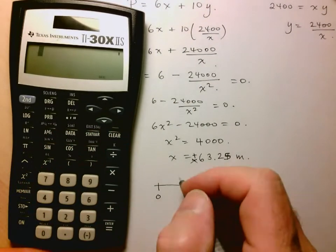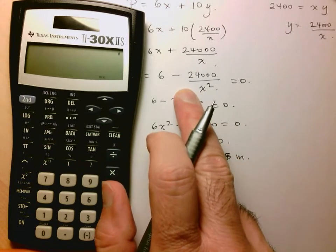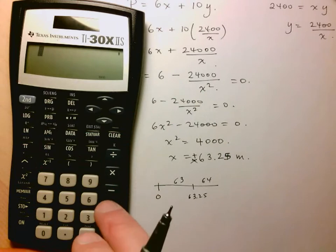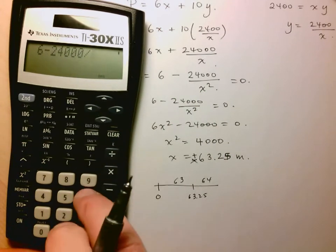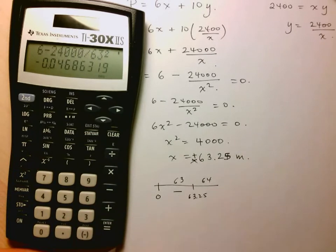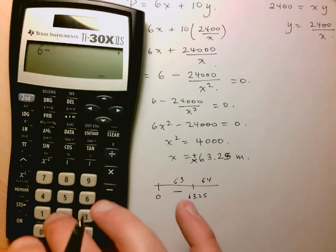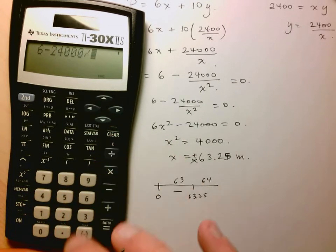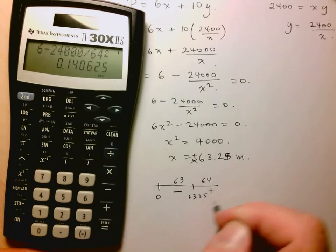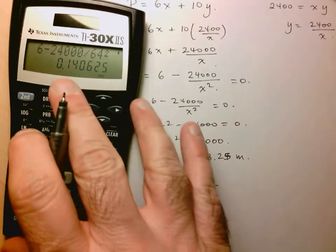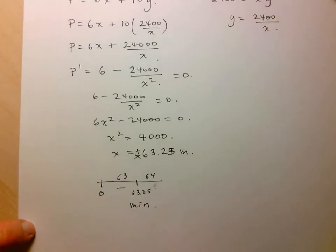So while I do have another critical point on the negative side, I'm not interested in it because I only care about values greater than zero. So let's test this critical point and see if it's indeed a minimum. So let's take 63 and 64 and stick that into the equation for the derivative. So 6 minus 24,000 divided by 63 squared gives me a negative number and let's now put in 64. So 6 minus 24,000 divided by 64 squared and that gives me a positive. So that indeed is a minimum and it's the only one in the domain that I'm interested in.